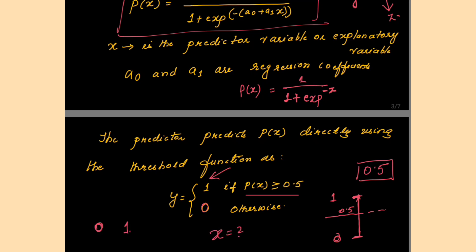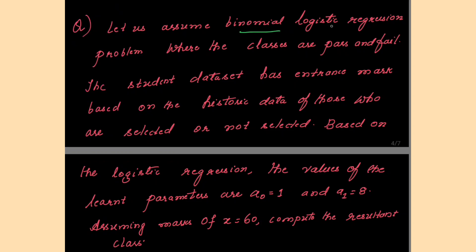You compute the probability value for a given value of x and check whether it is above or below 0.5. If below 0.5, it classifies as 0; if above 0.5, it classifies as 1. Let us see an example. We assume a binomial logistic regression problem where the classes are pass and fail.